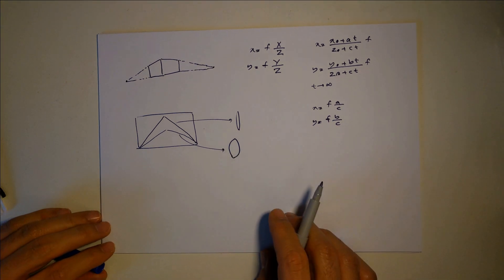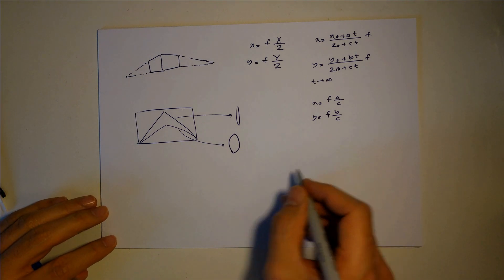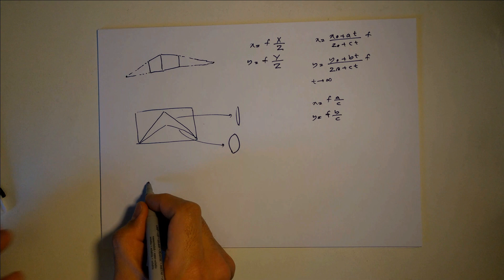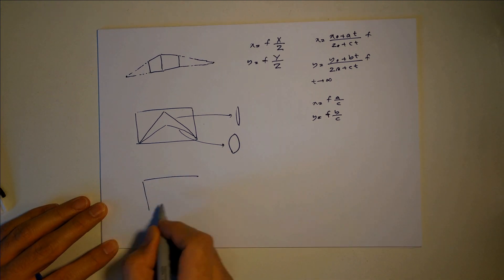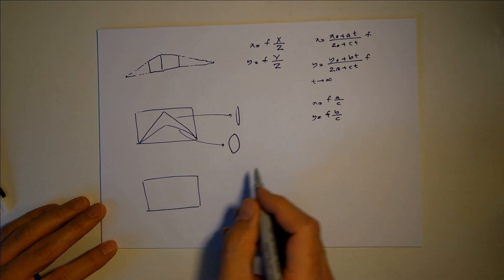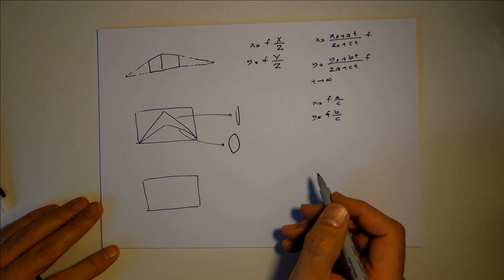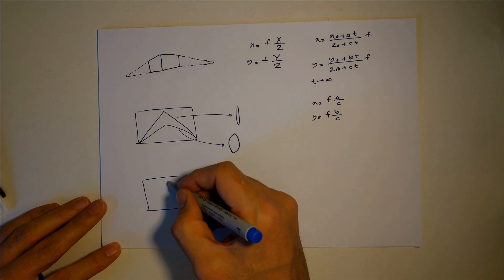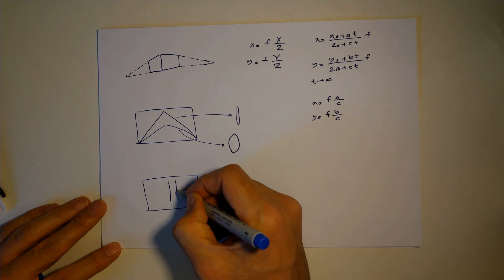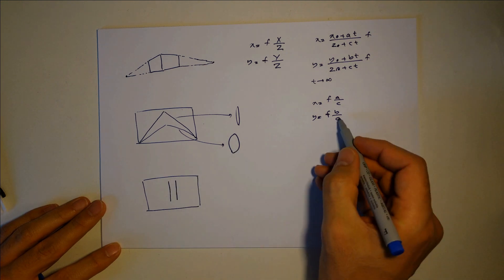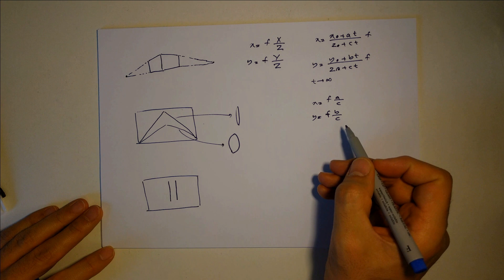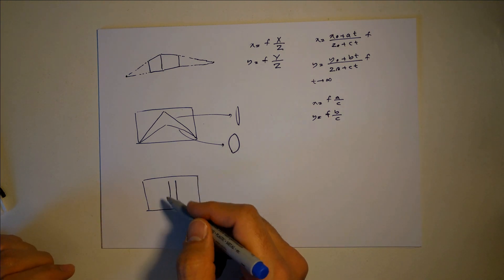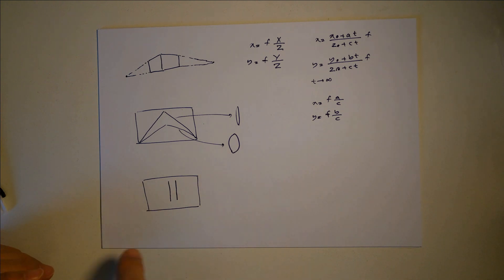If two lines are parallel to the camera plane, then c equals zero. In that case, the lines will appear parallel and never converge, because c is zero in the vanishing point formula. That is why two parallel lines seem parallel when the camera plane is parallel to them.